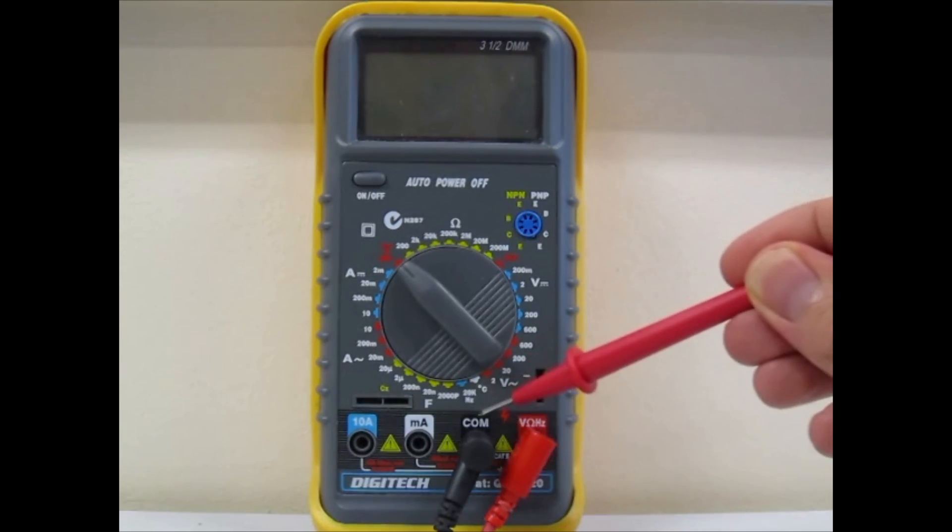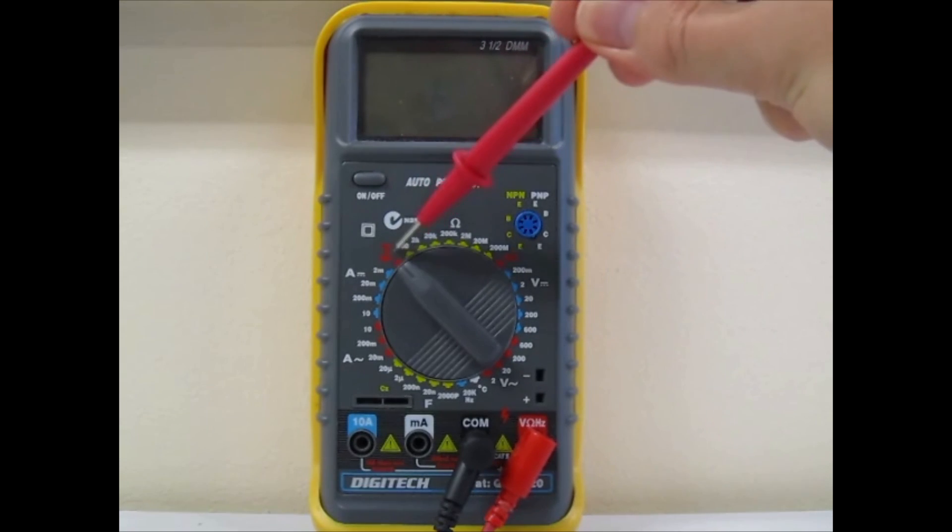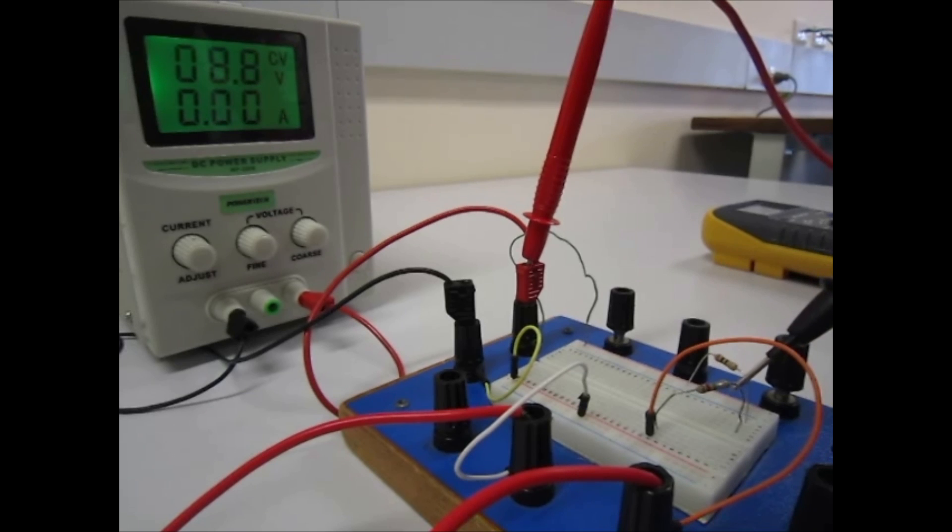One great function of the digital multimeter is the conductivity tester. If current can flow between two points the meter will beep. This is a great tool for checking if connections exist between two points. This is especially great for fault finding.